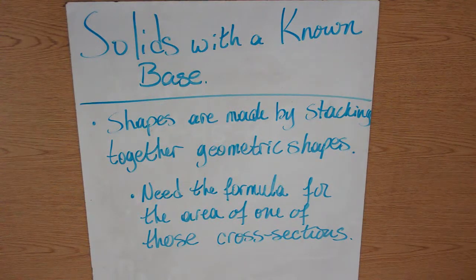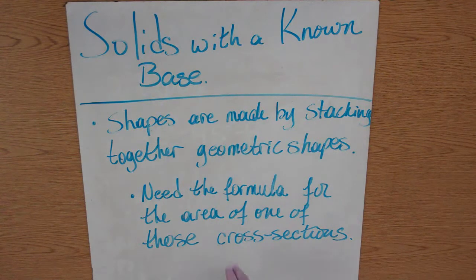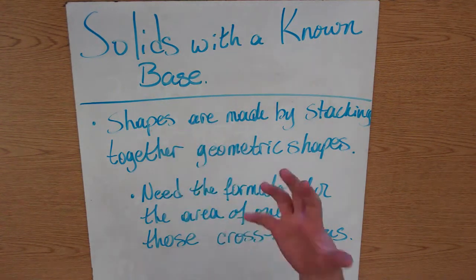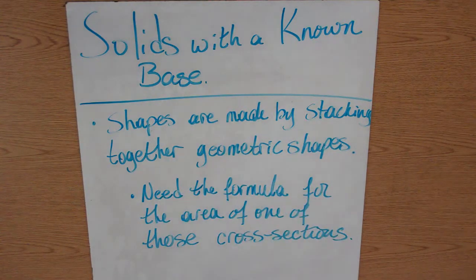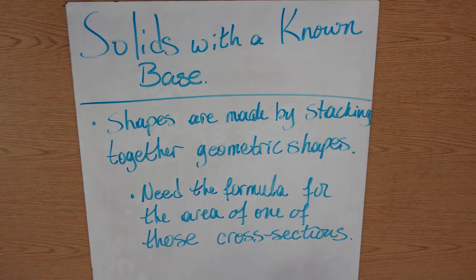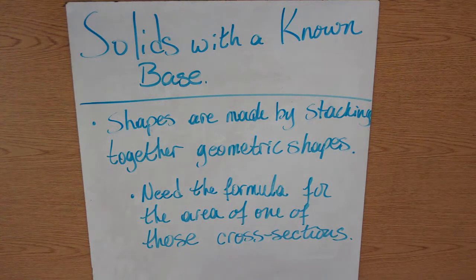In this video we're going to go over solids with a known base. To this point our shapes are made up, when we're finding our solids, our shapes are made up by stacking together geometric shapes. So we need the formula for the area of one of those cross sections.